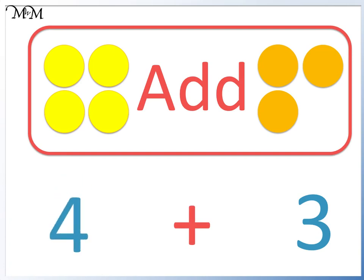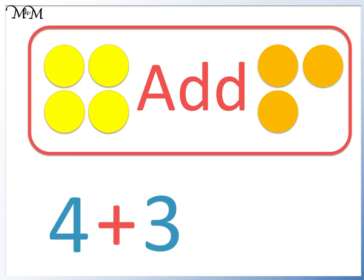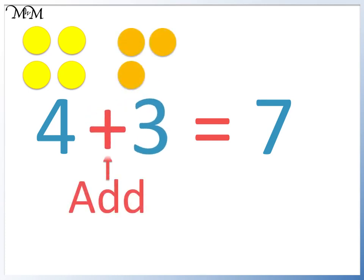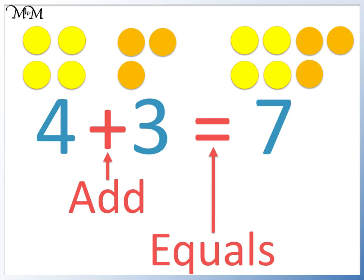We have one, two, three, four, five, six, seven counters all together. We write an equal sign before our total answer. We had four and three. The addition tells us that we will combine these numbers to make a total. The equal sign tells us there is the same value on each side of the equal sign.